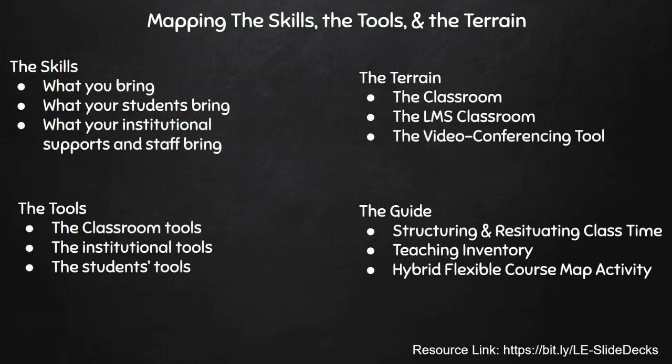I talk to many faculty who say they're not really good at technology, and then we start talking about all the things they can do. We're sometimes too focused on what we can't do, so when we start listing everything we can do, it's a surprisingly long list. And then the most important document is probably the hybrid flexible course map activity — it helps you walk through each week: what does it look like face-to-face, for virtual students, and for asynchronous online students?